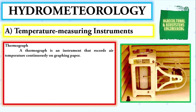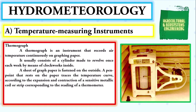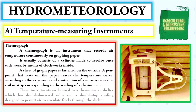Next, the thermograph — an instrument that records air temperature continuously on graphing paper. It usually consists of a cylinder made to revolve once each week by clockworks inside. A sheet of graph paper is fastened on the outside, and a pen point resting on the paper traces the temperature curve according to the expansion and contraction of a sensitive metallic coil or strip, corresponding to the reading of a thermometer.